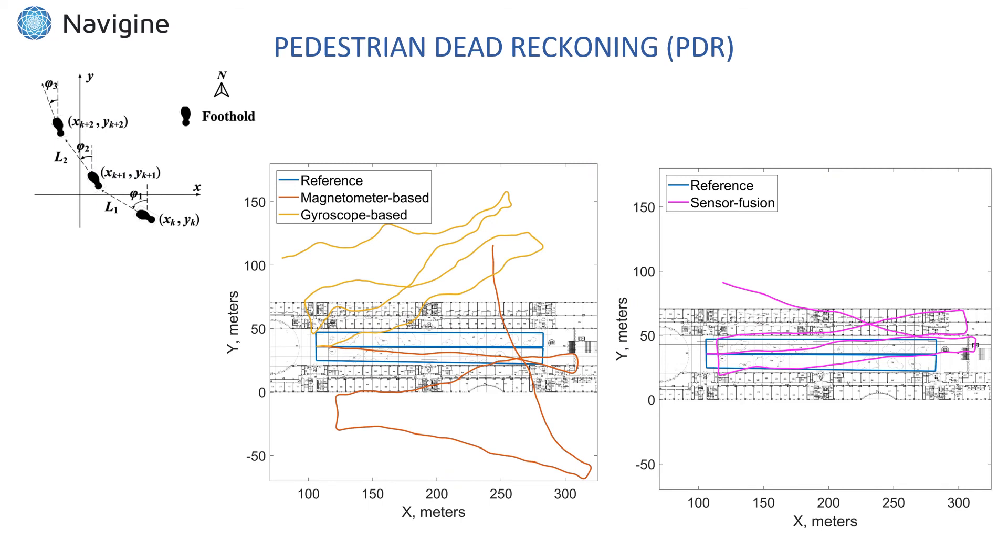Finally, after obtaining heading from complementary filter and steps from pedometer algorithm, one can combine this data in a so-called pedestrian dead reckoning approach, PDR.